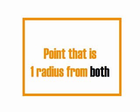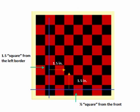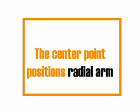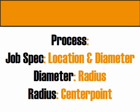To determine the location of the radius, we reverse-engineered the circle. We know we have a three-inch circle, so the radius is one and a half inches. We found the singular point that is one radius from both the front and left borders — measuring an inch and a half in from the front border and an inch and a half from the left border. That exact point is the center point. From there we extend the radial arm, which cuts the arc of our circle, giving us a three-inch diameter hole.